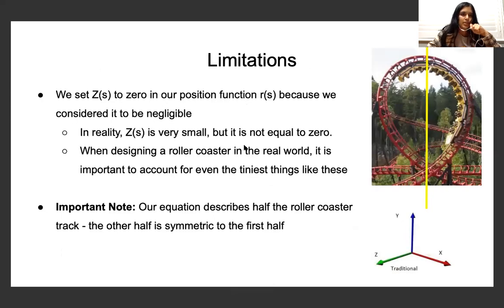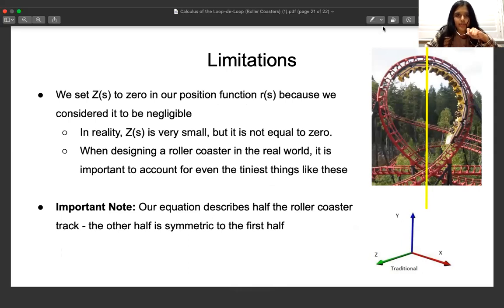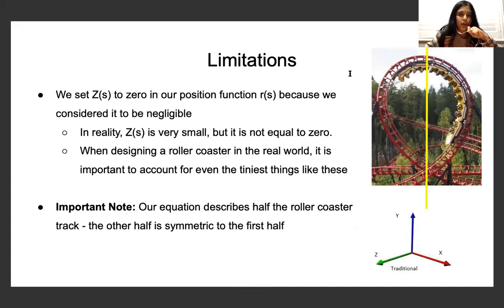So now let's discuss just a couple of limitations of the study. We set Z(S) to zero in our position function because we considered it to be negligible. In reality, Z(S) is not negligible. It's very small, but it's not equal to zero. So when we design a roller coaster in the real world, it's important to account for even the tiniest things like these. An important note: our equation describes half the roller coaster track and the other half is symmetric to the first half.